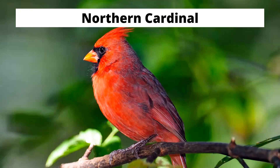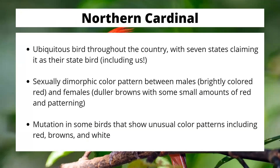Our northern cardinal — here in Indiana we see a lot of these. I see several mated pairs outside my house constantly. Northern cardinals are fairly ubiquitous; it is our state bird here in Indiana, and six other states also claim it as their state bird. They are sexually dimorphic in their color pattern, meaning males are much more brightly colored — bright red — while females are more dull or brown. Northern cardinals can also get a mutation showing unusual color patterns with blotchy reds, browns, and whites regardless of gender.